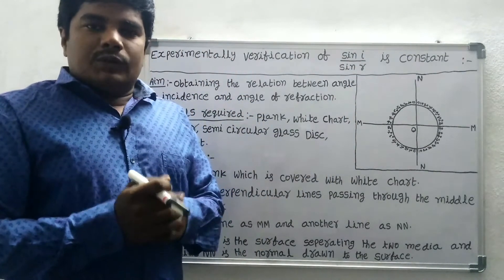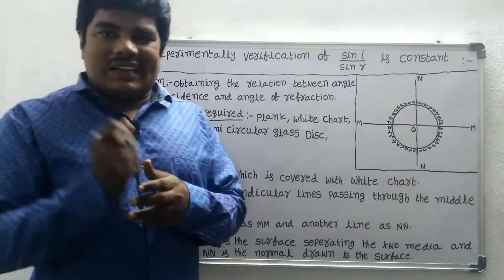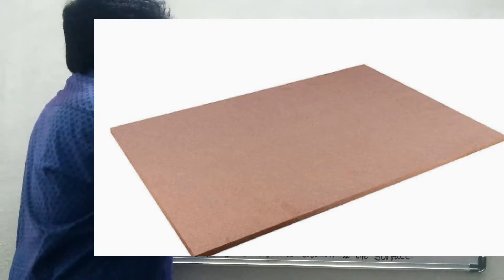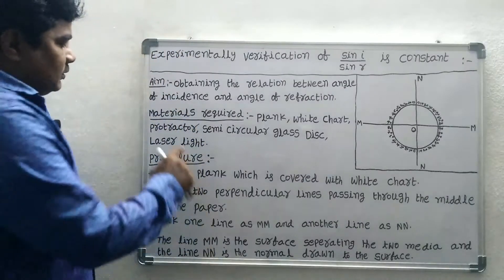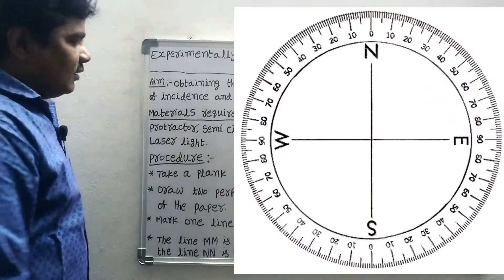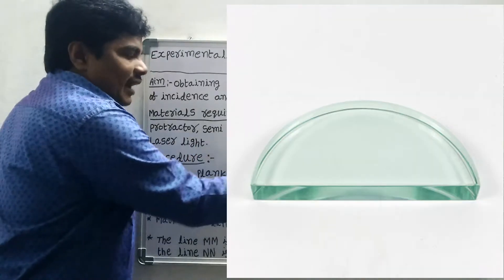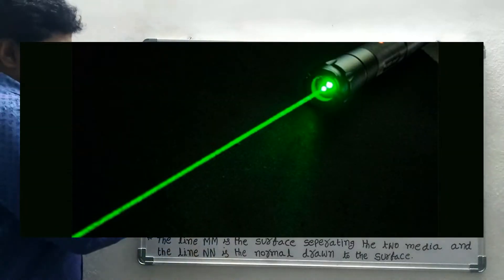To do this experiment, the materials required are: a plank, white chart, protractor, semicircular glass disk, and laser light.